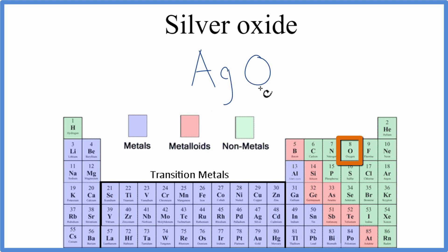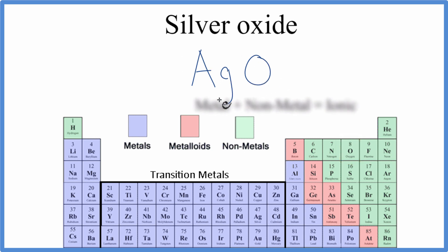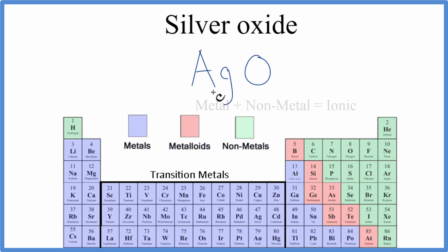Silver is a metal, and oxygen is a non-metal. So we have an ionic compound, and we have to take the ionic charge of each of the elements into consideration when we write the formula.